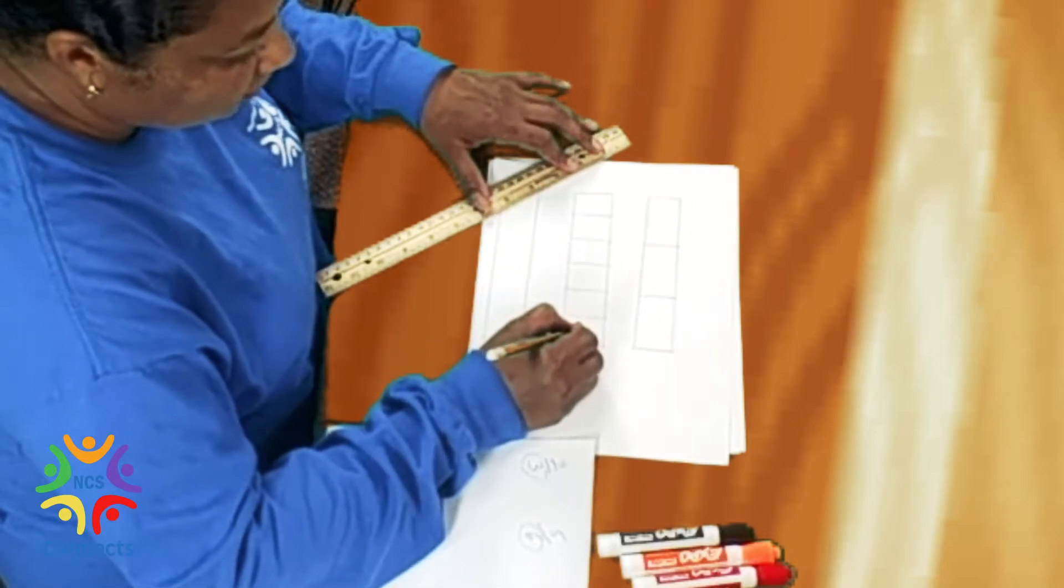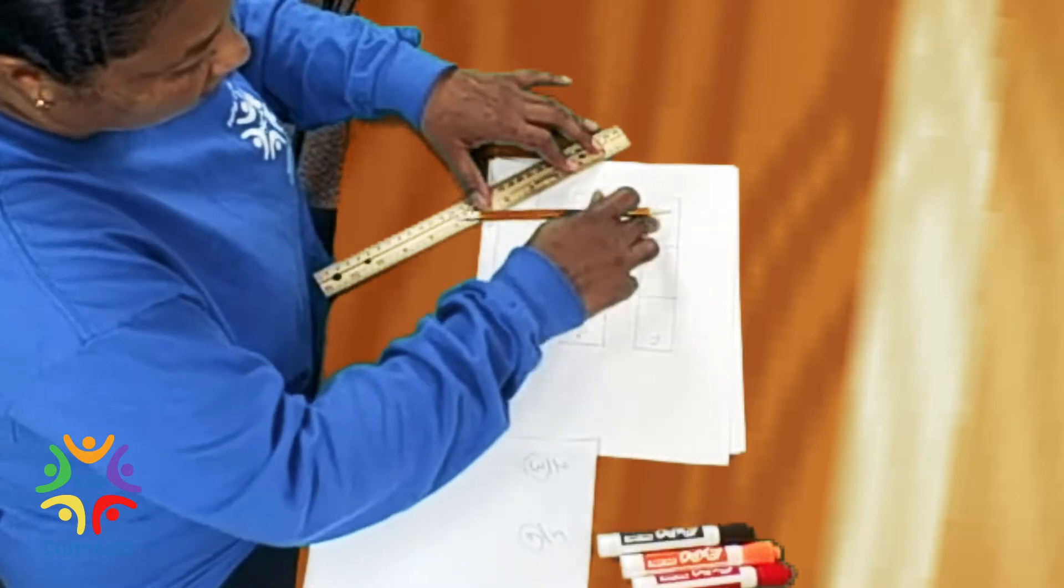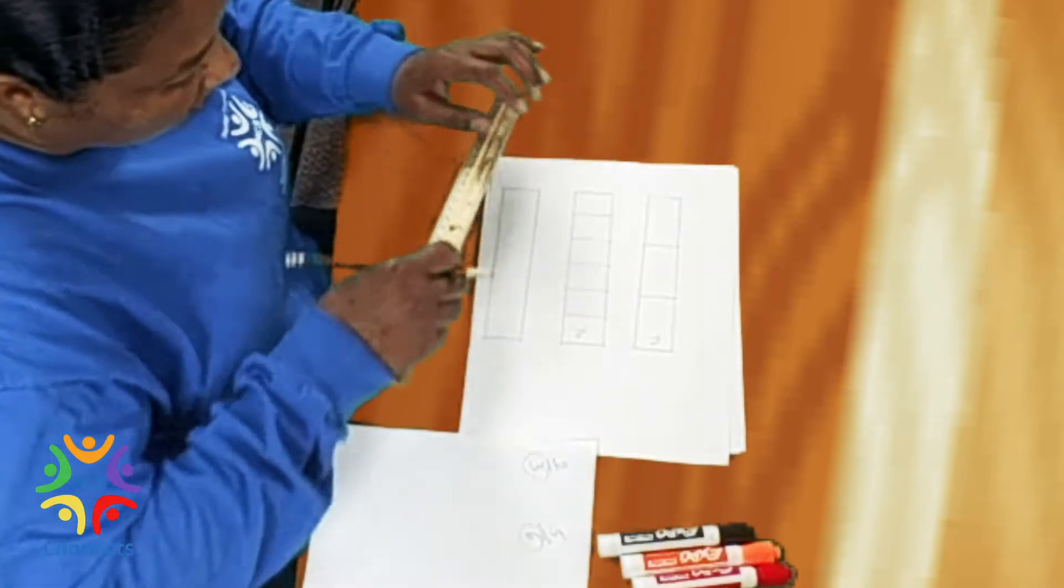Okay, so this is one-sixth. And this is one-third, right? One, two, three. That's one-third.